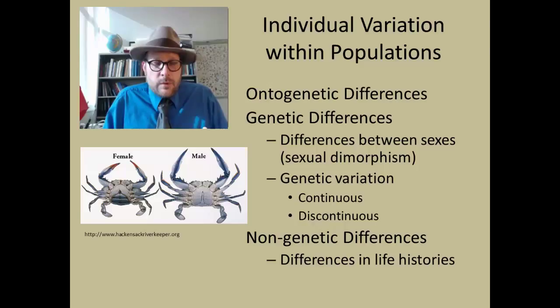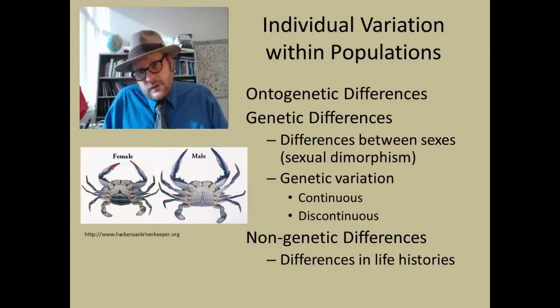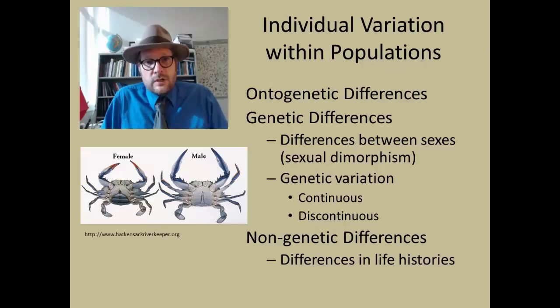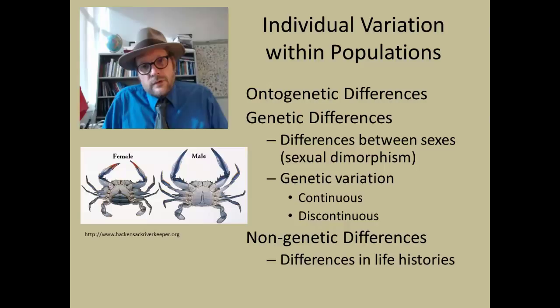There are different types of variation within a population. In the previous lecture we talked about ontogenetic differences — those based on the lifespan of each individual, where young and old can show enormous differences by age. Another type is genetic differences, the most common example being sexual dimorphism, which is where there are differences between males and females. The blue crab is a good example, where the female looks different from the male and even has different colored pinchers. You have to account for the presence or absence of sexual dimorphism in your sample.